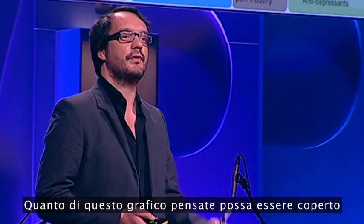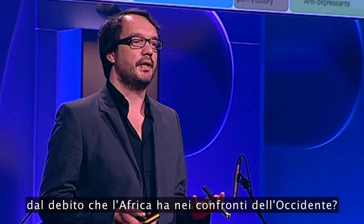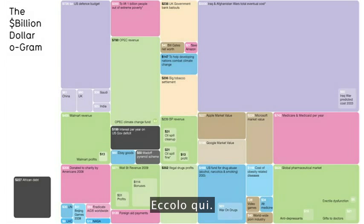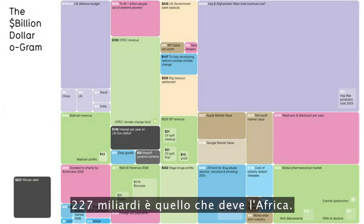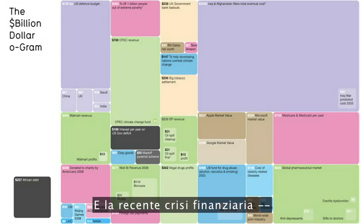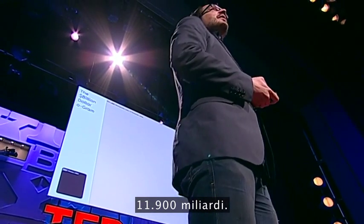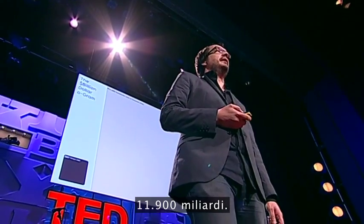So now we have this texture and we can add numbers to it. A new figure comes out — African debt. How much of this diagram do you think might be taken up by the debt that Africa owes to the West? So there it is — 227 billion is what Africa owes. And the recent financial crisis — how much of this diagram might that figure take up? What does that cost the world? Let's take a look. 11,900 billion.